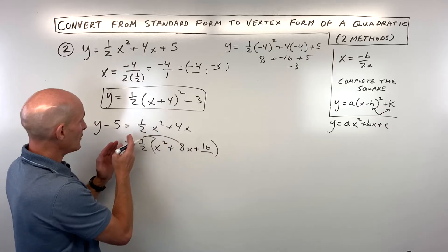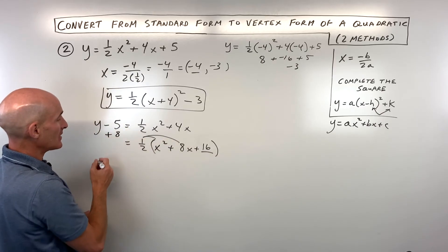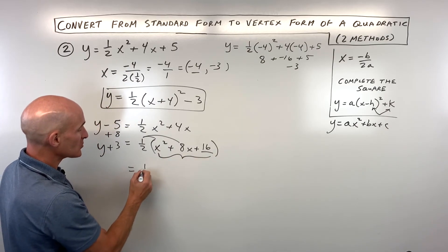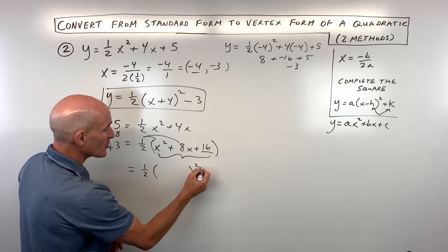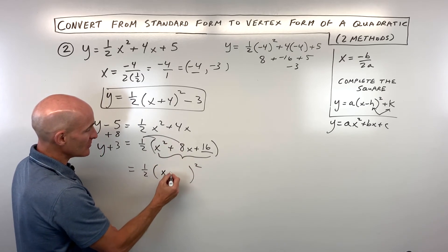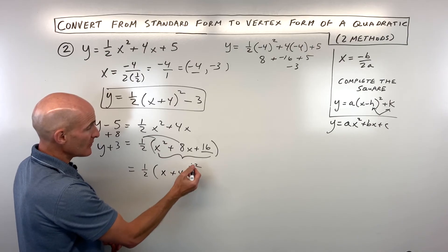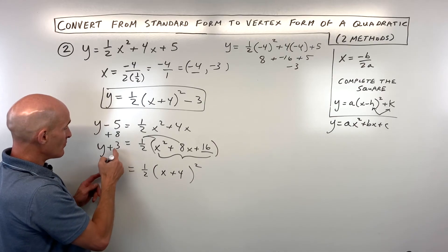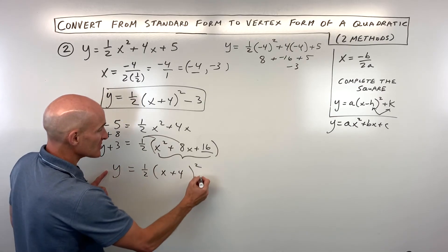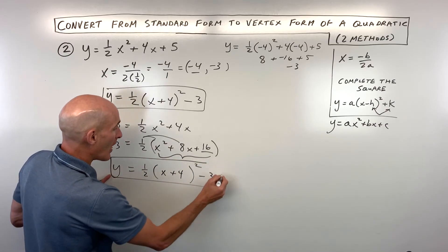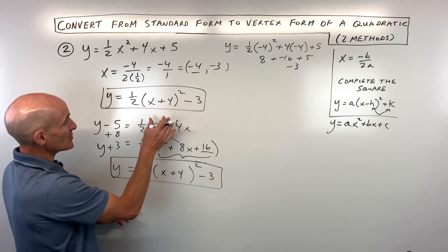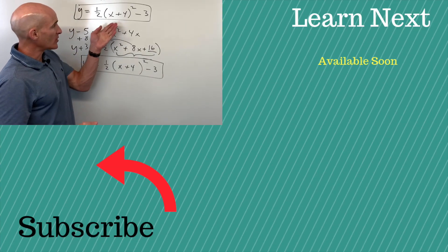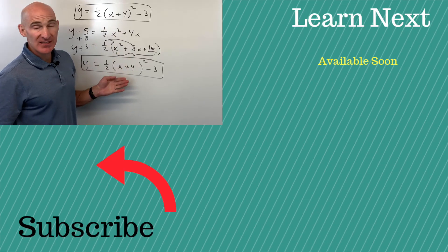Since we add 8 to the right side, we add 8 to the left side as well, giving us y plus 3. Now factor the perfect square trinomial — remember the trick: it's always half of the b value — so this is x plus 4, the quantity squared. If it was minus 8x, it would be minus 4. The last step is to subtract 3 to the other side to get y by itself: y equals one-half times x plus 4 squared minus 3. Both methods give the same answer, so it depends on your class or which method your teacher prefers.